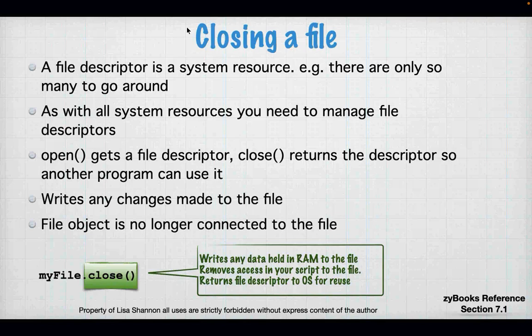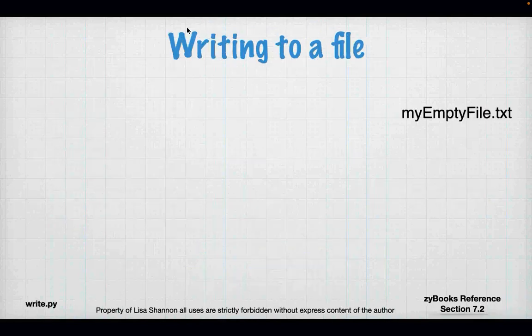Closing a file descriptor: the descriptor is a resource you have to manage. `open` gets it, `close` returns it. `close` also writes any changes you made to the file, because no operating system I know of always writes to a file — you have to close it or flush it to actually get the contents onto disk. If you don't do that, there's a possibility that not all your data makes it where you want. Close writes anything held in RAM to the disk, removes access in your script to the disk, and returns the file descriptor to the OS for reuse. You always have to close it.